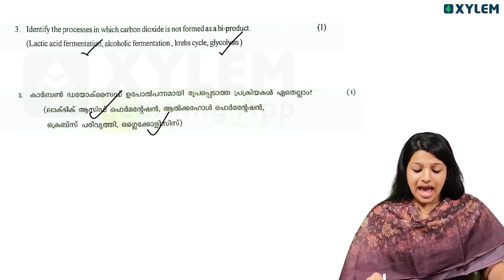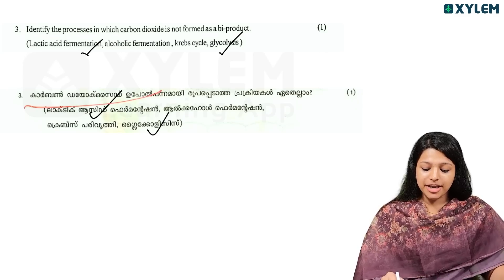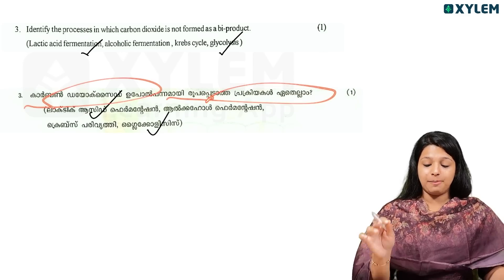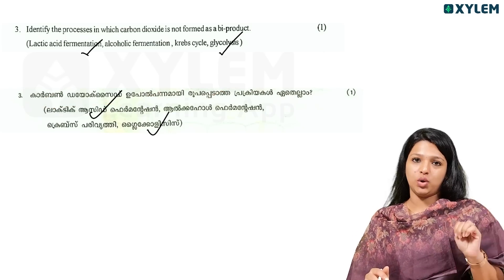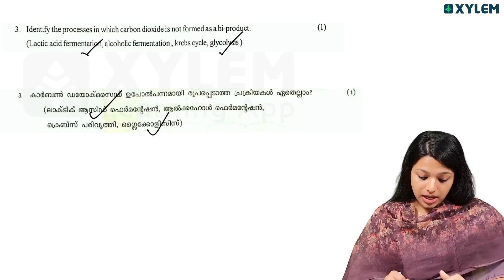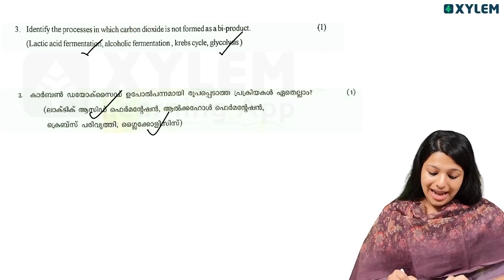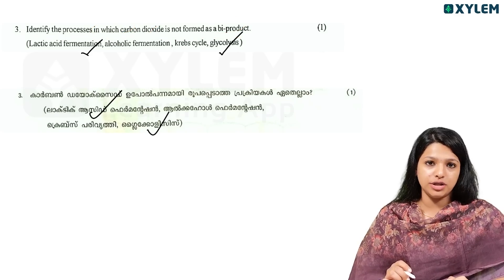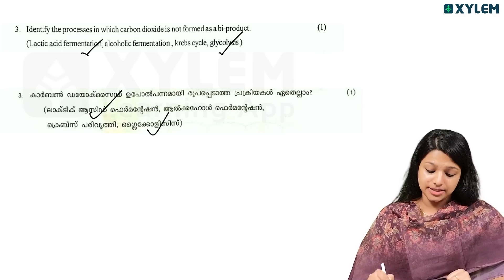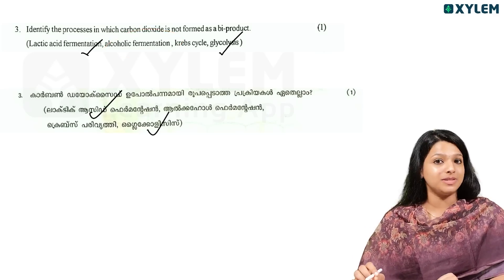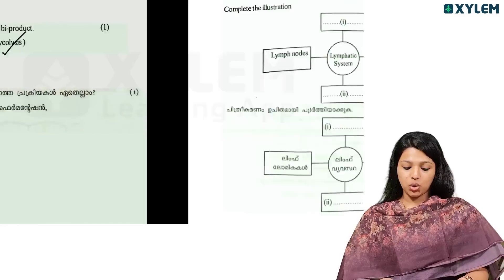Identify the process in which carbon dioxide is not formed as a by-product. The options are: lactic acid fermentation, alcohol fermentation, Krebs cycle, and glycolysis. Carbon dioxide is not formed as a by-product in lactic acid fermentation. Alcohol fermentation does produce CO2 as a by-product. Therefore, lactic acid fermentation is the correct answer.